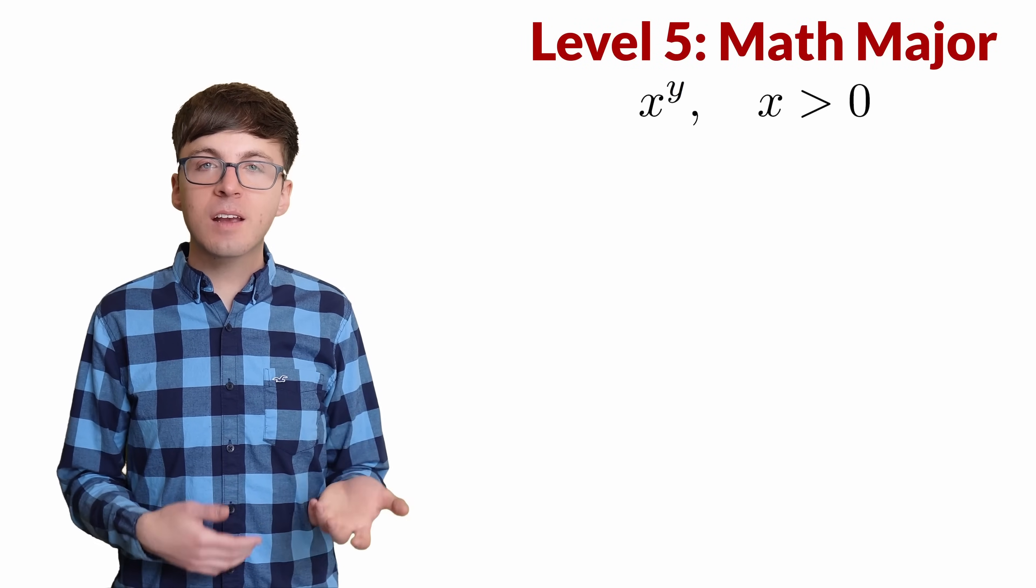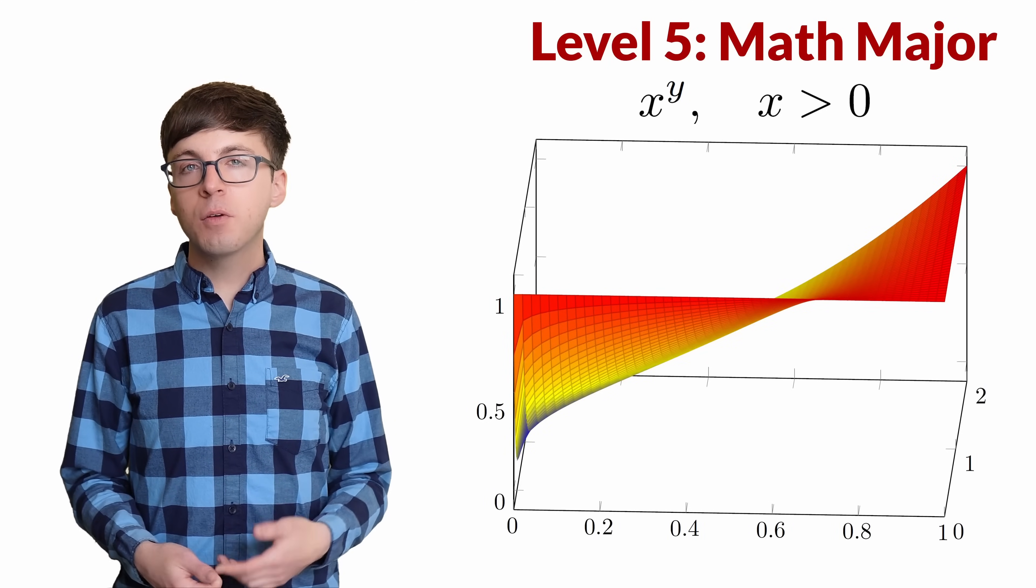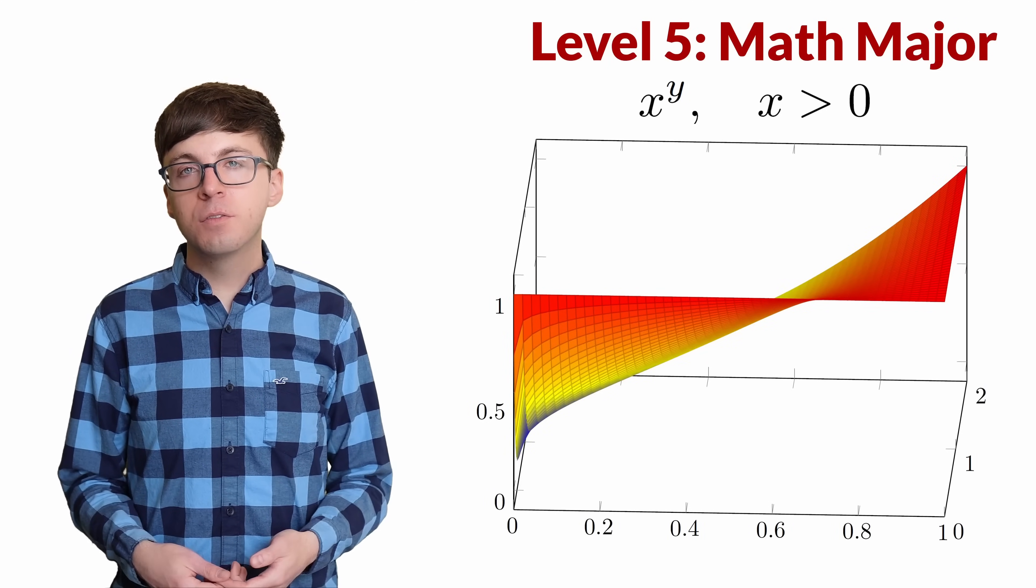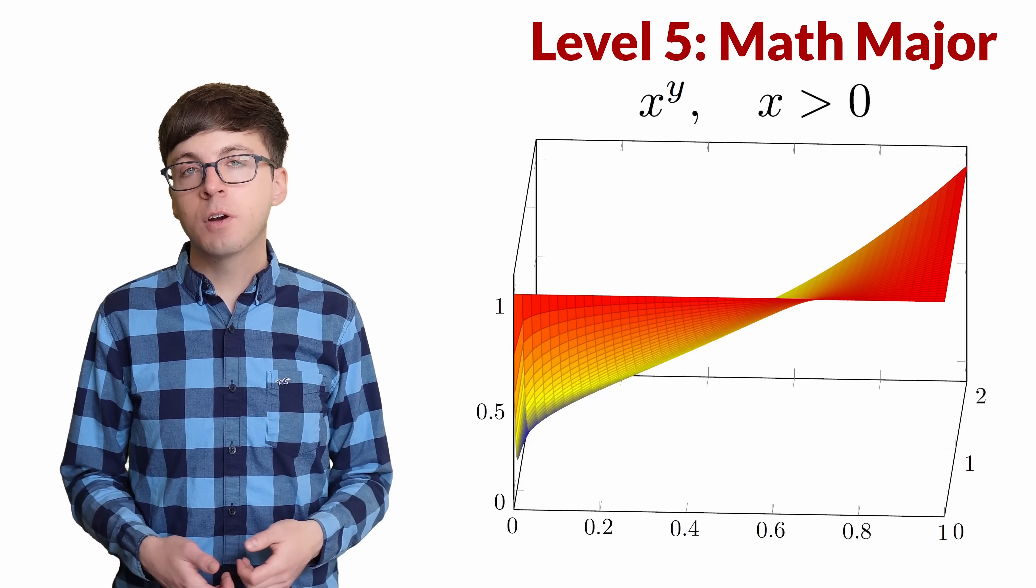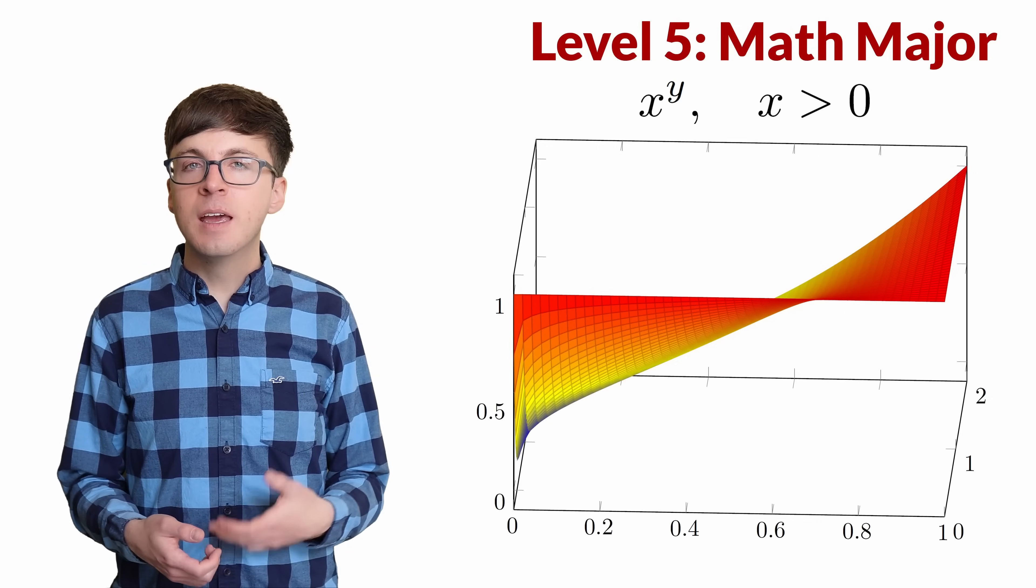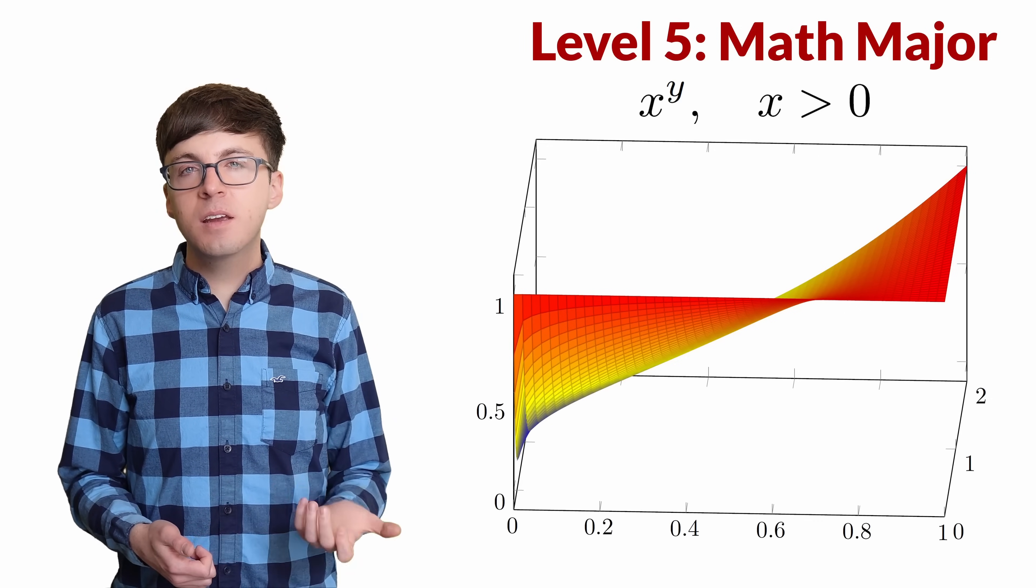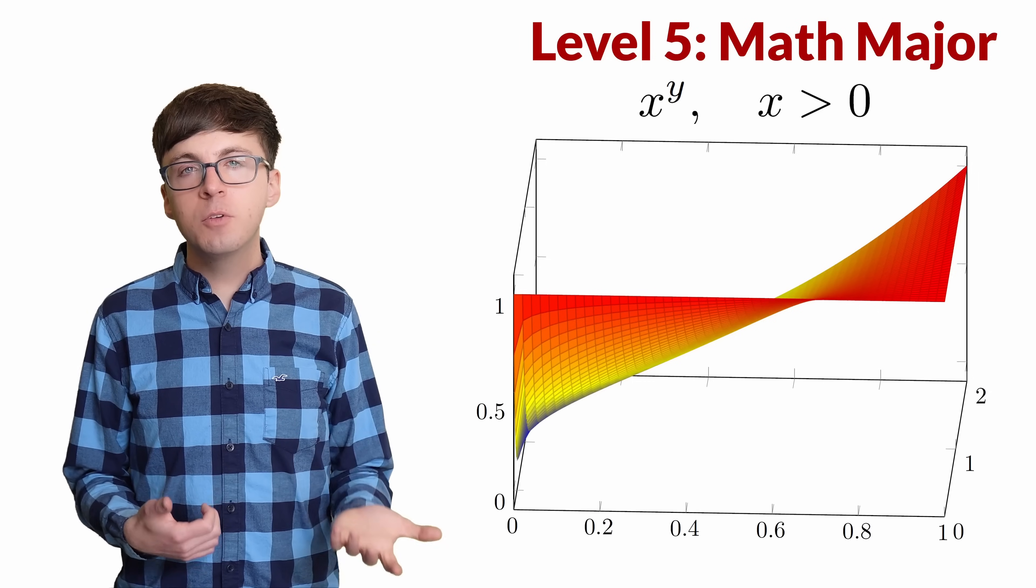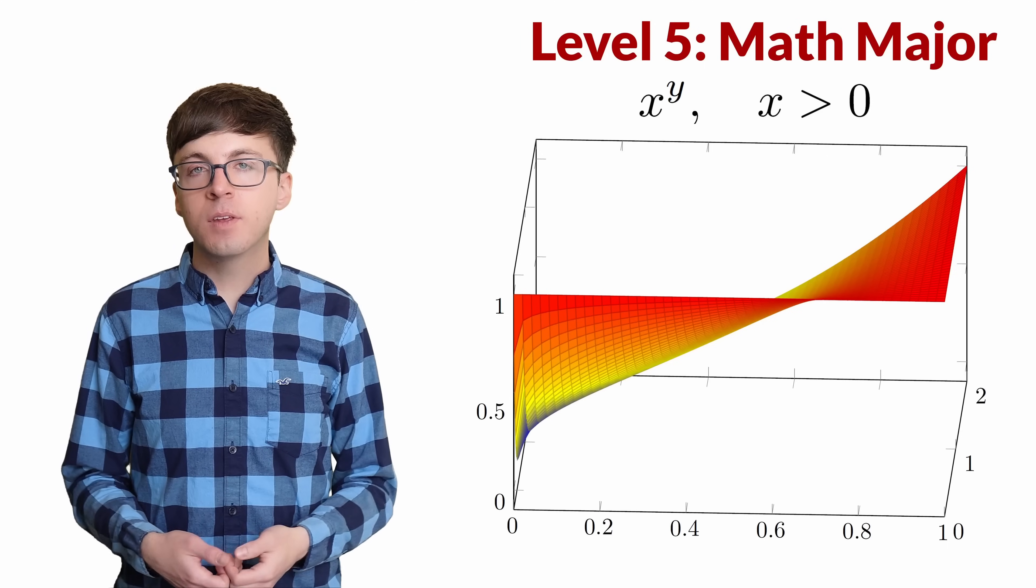For level 5, let's think about x to the y as a function of two variables. To start with, we'll require x to be positive, but y can be any real number. This is a nice continuous function on this region. To define 0 to the 0, we might try to extend this function in a continuous way to the point 0, 0. To be a continuous extension, we should be able to approach the point 0, 0 along any path and always get the same limit.